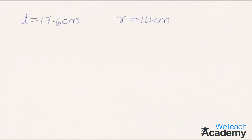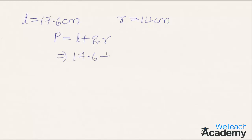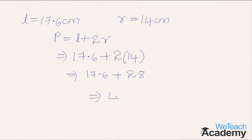Now let us find the perimeter, where the length of arc is equal to 17.6 centimeters and radius is equal to 14 centimeters. The perimeter of a sector is given by the formula l plus 2r. By substituting the values we get 17.6 plus 2 times 14, that is 28. By adding we get the result as 45.6 centimeters as the perimeter.